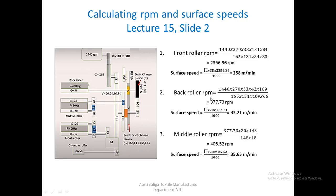For the back roller RPM, it goes similarly: 1440 into 270 divided by 165, into 33 divided by 131, into 42 divided by 109 — which is a carrier — so multiply by 109 and divide by 66 which is the CP. You get the back roller RPM as 377.73. The middle roller RPM comes from the back roller speed: 377.73 multiplied by 20 divided by 148, into 143 divided by 18, which gives the middle roller RPM.